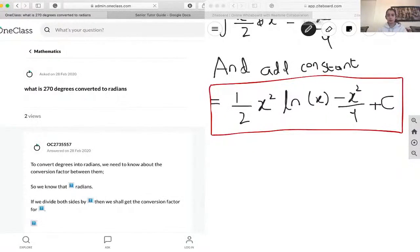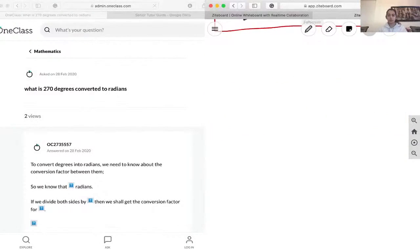Okay, let's move on to our next question right here. So the question asks to turn 270 degrees to radians. 270 degrees to radians is our question.